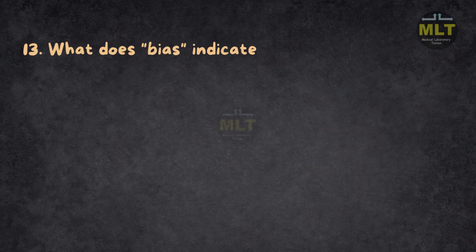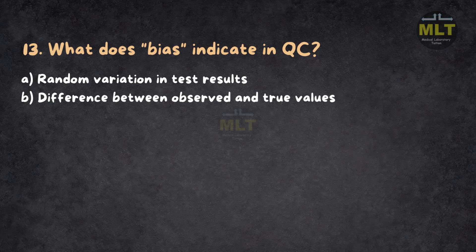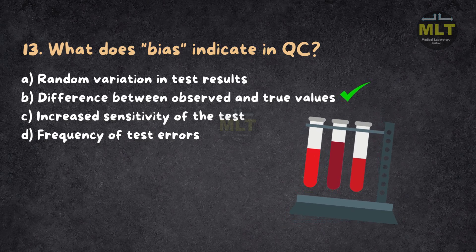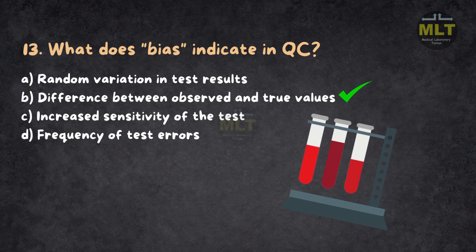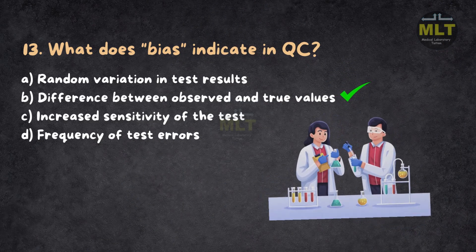Question 13: What does bias indicate in QC? a. Random variation in test results. b. Difference between observed and true values. c. Increased sensitivity of the test. d. Frequency of test errors. Correct answer: b. Difference between observed and true values. Bias is a measure of accuracy, reflecting how far the test results deviate from the true value. Random variation relates to precision, not bias. Sensitivity and error frequency are unrelated to this definition.